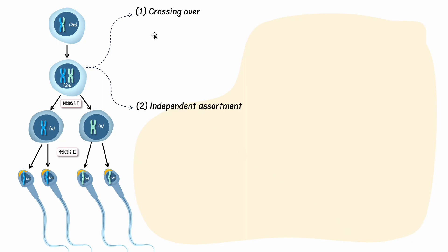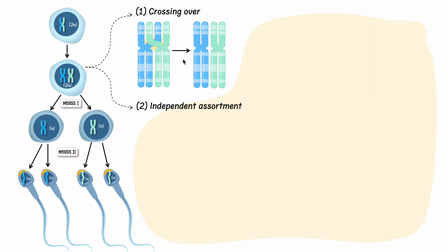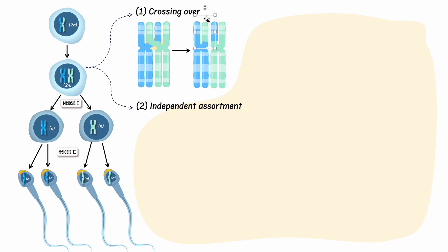During meiosis, two very important phenomena happen: crossing over and independent assortment. Crossing over happens during prophase 1. At this point, we have the duplicated DNA. Crossing over is a phenomenon where the mother's copy will exchange DNA with the father's copy — genes will be switched and crossed over. Now instead of having two copies of pure father's DNA and two copies of pure mother's DNA, because of crossing over you form chromatids that are unique — this chromatid, for example, is a mix between your mother and your father's DNA. That's the effect that crossing over causes.